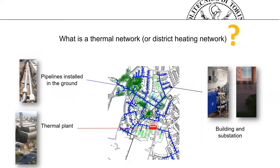The same can be seen on a map. Here we can see a map of a district heating system, showing the thermal plants — in this case just one — in red. In blue, we can see the pipelines installed in the ground that connect the thermal plants to the various buildings. In black, the various buildings where the substations are installed.